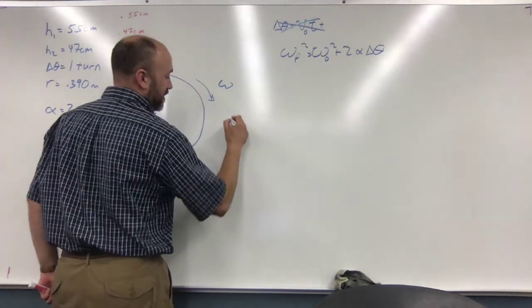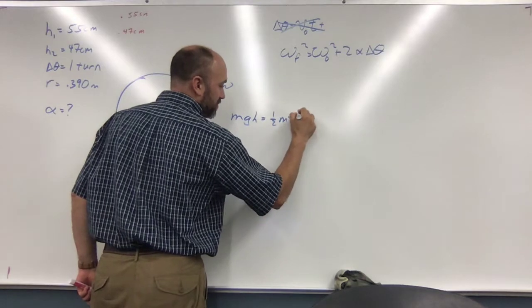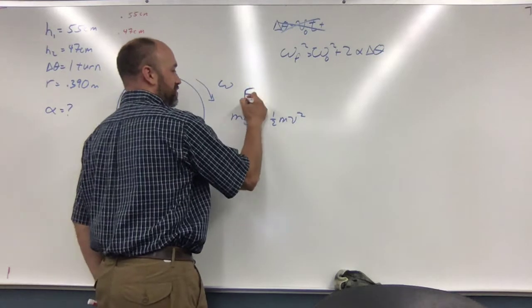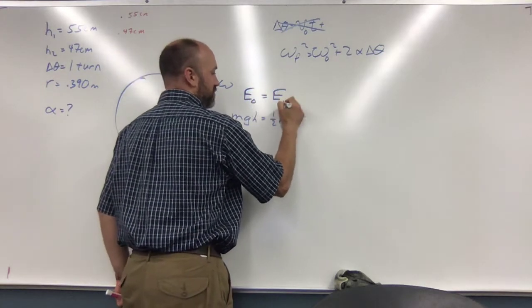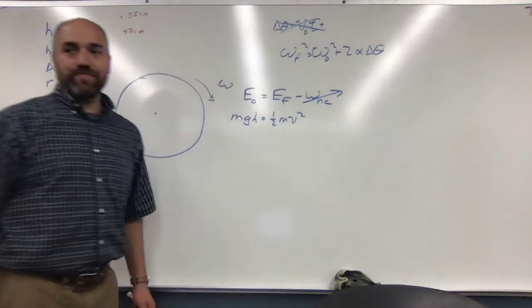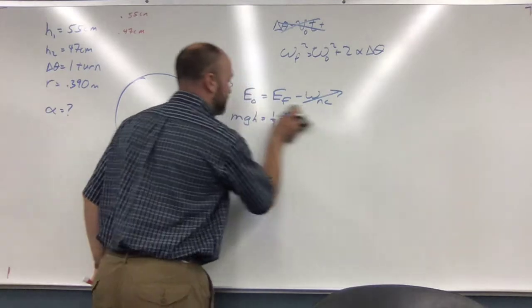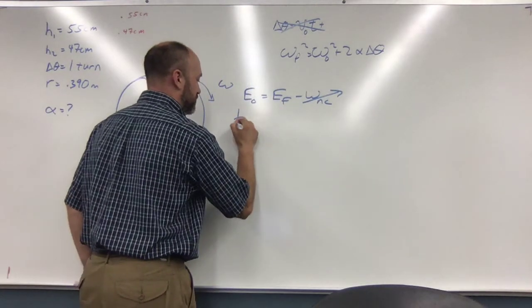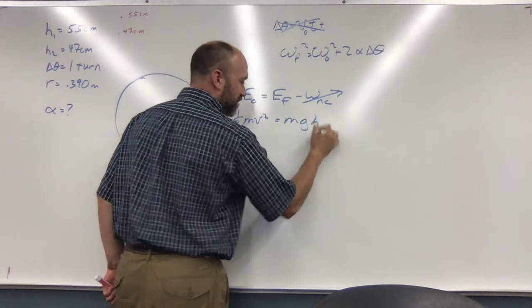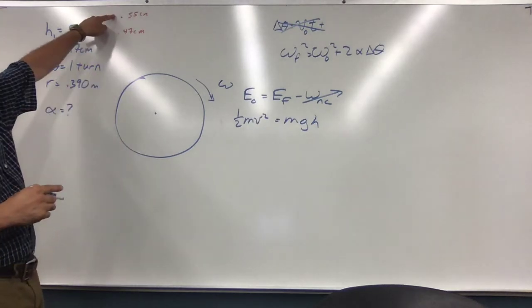So we say MGH equals one half MV squared. This is final energy. Let me write this out. Energy initial equals energy final minus the work not conserved, and there's no friction. So initially—now I wrote it backwards—initially it has kinetic energy and finally it has potential energy. Here's the initial situation. There's your final situation.